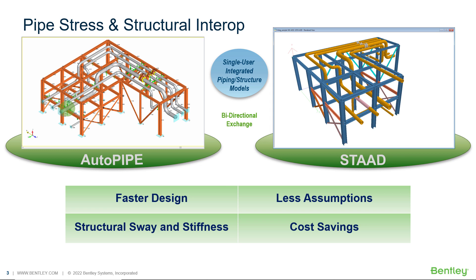We are making fewer assumptions by including accurate pipe supports and equipment loads and realistic structural and piping design flexibilities and stresses. This can all lead to cost savings. Early clash detection can be seen to avoid costly redesign and construction delays, and there's potential cost savings on pipe supports and steel structure now that we're considering real flexibilities and real support loads.